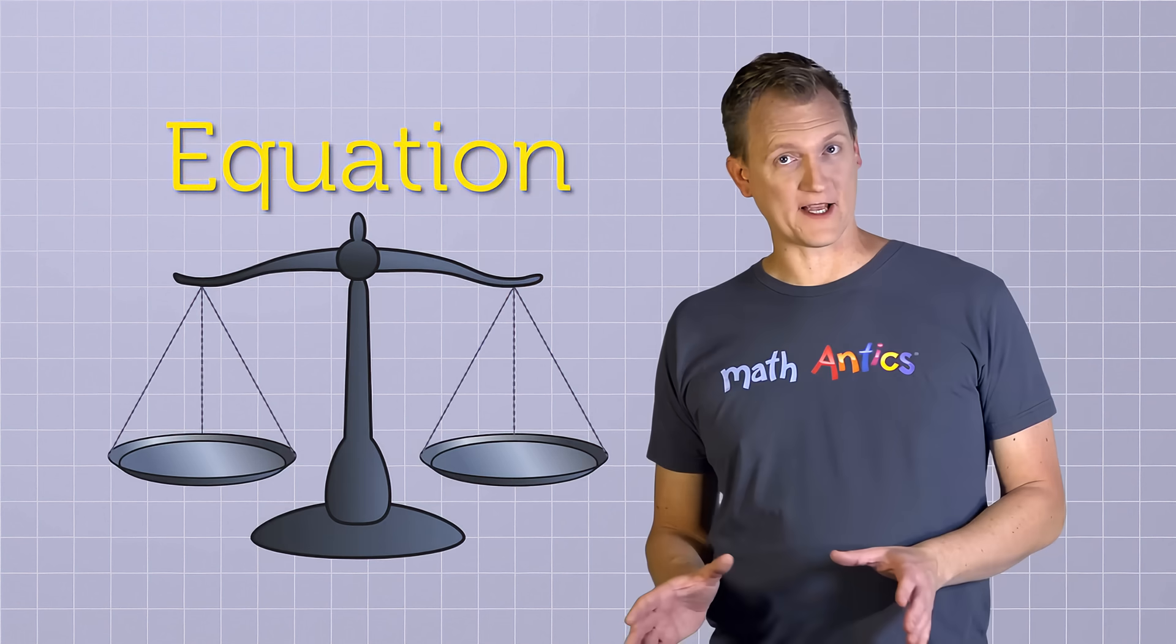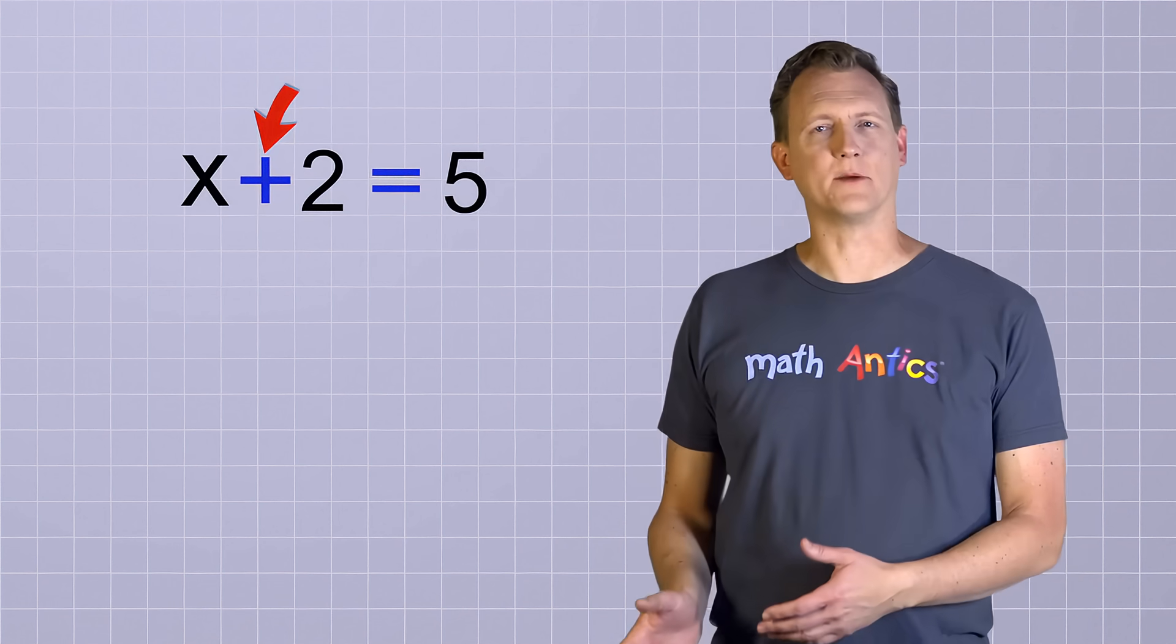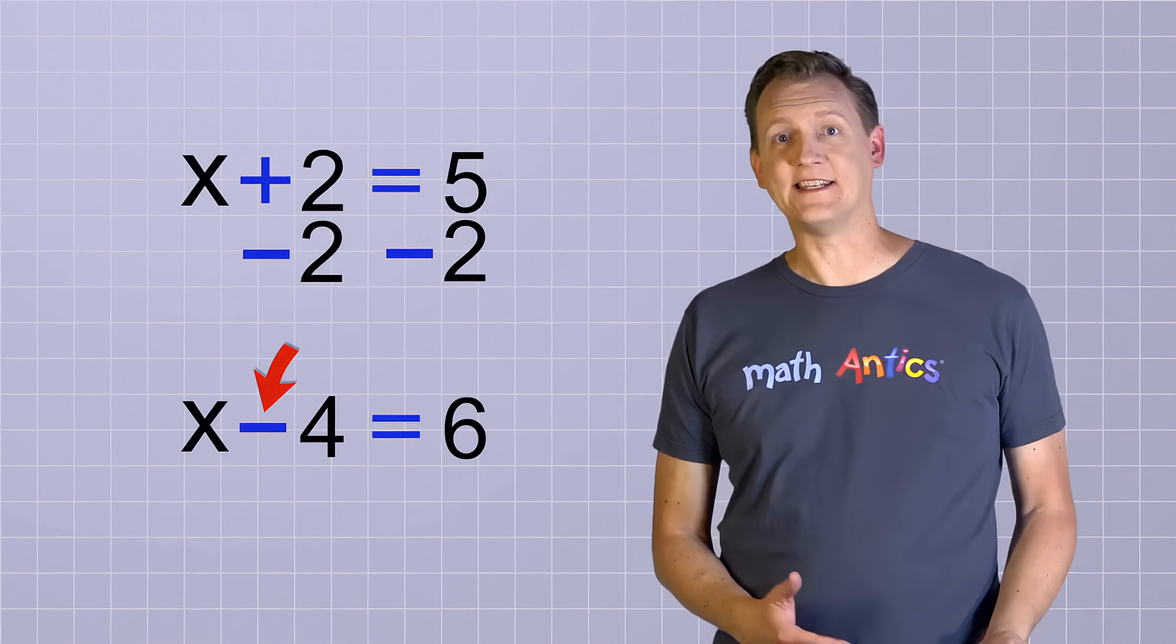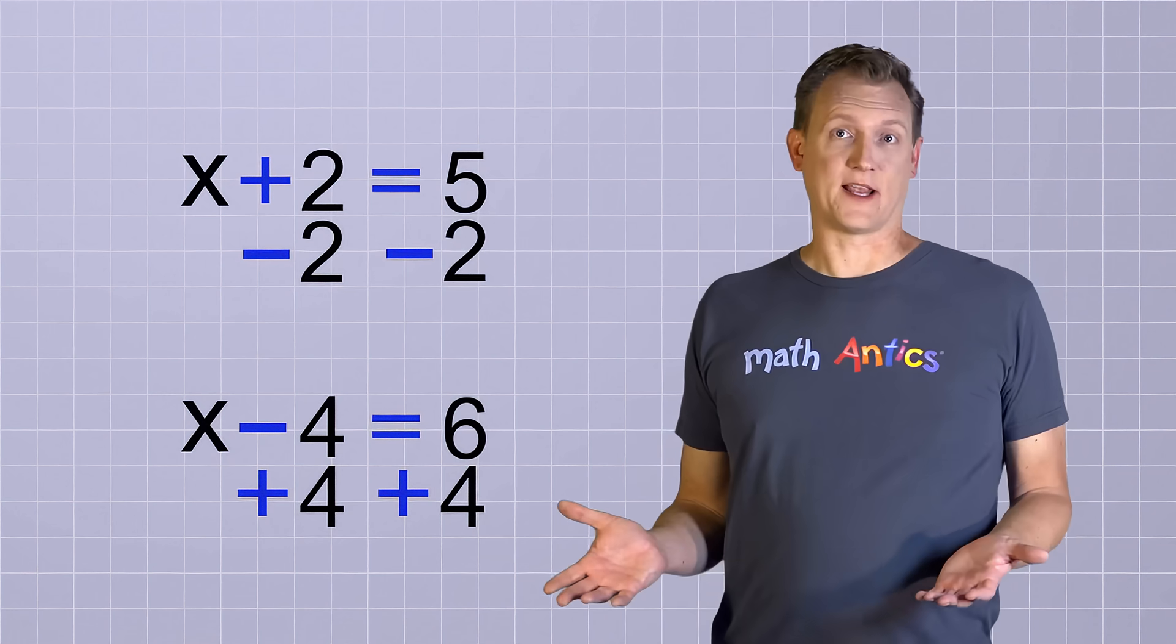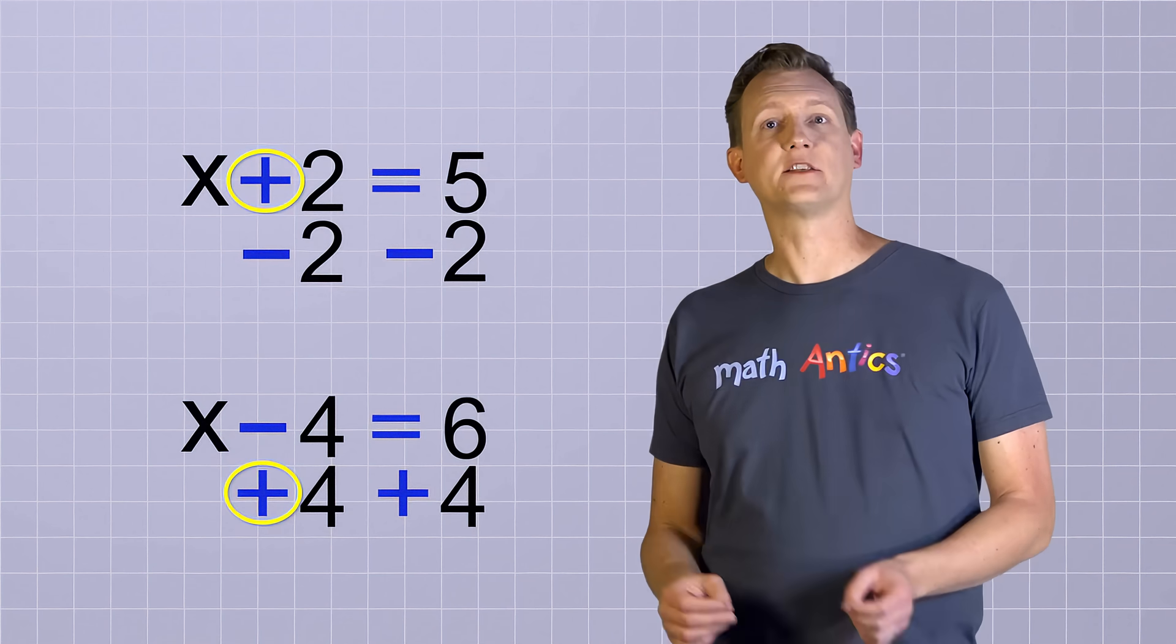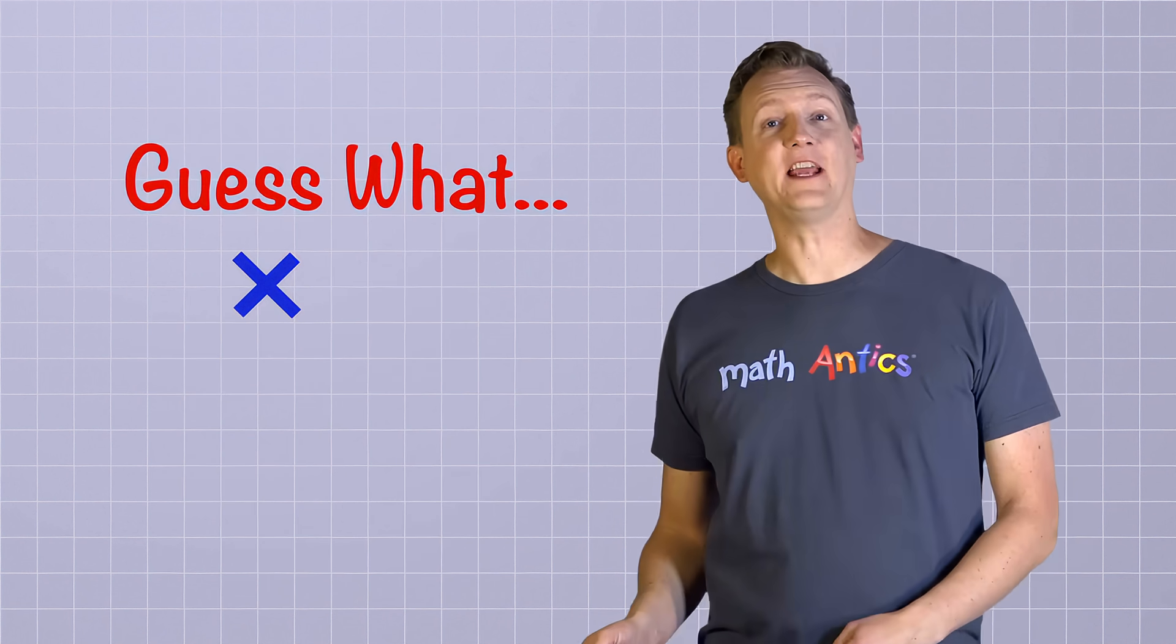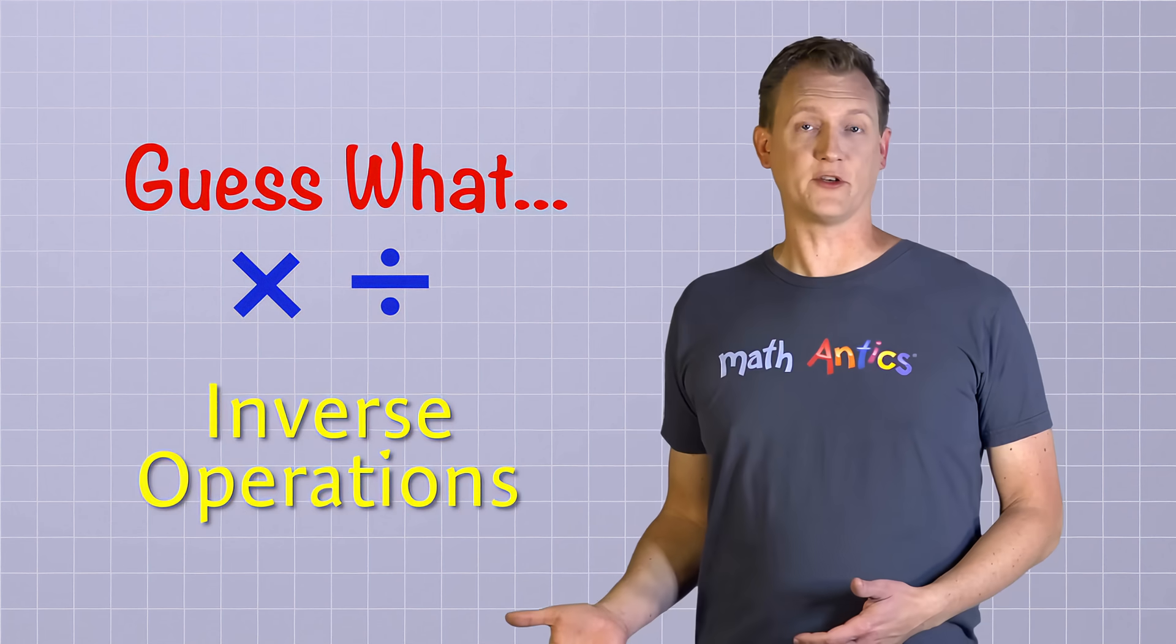Now remember from the last video, in equations where a number was being added to an unknown, we had to subtract that number from both sides. But when a number was being subtracted from the unknown, we had to add that number to both sides. And that makes sense because, as we learned in the video called What is Arithmetic, addition and subtraction are inverse operations. They undo each other. Well guess what? Multiplication and division are also inverse operations, so we can use them to undo each other too.